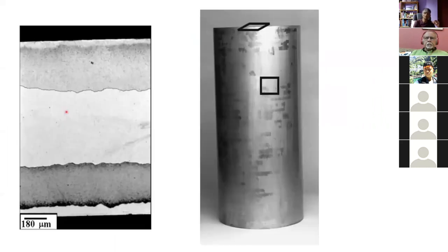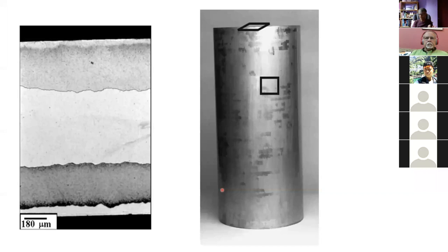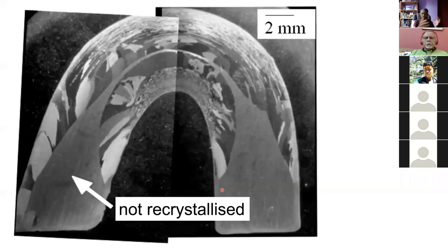You can even make grains grow circumferentially around the tube. To show how bizarre the microstructures can be: if you take the as-extruded material and bend it, along the neutral axis there's zero stress, but the surrounding regions are deformed to a greater extent. When you recrystallize, you can see the effect of the different levels of plasticity due to the bending, with the neutral axis visible.